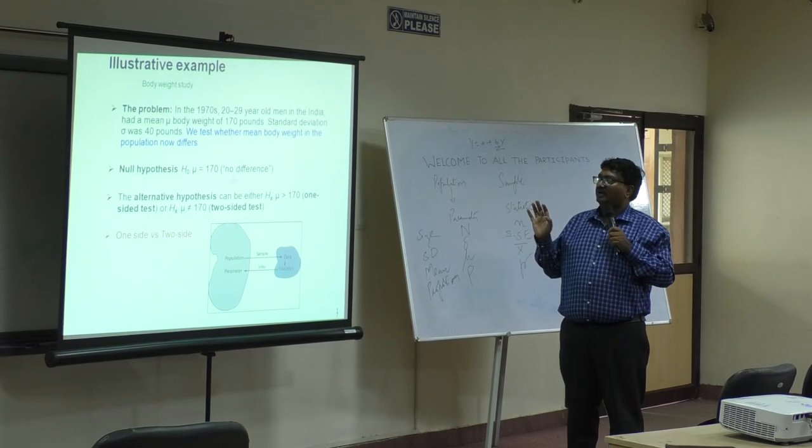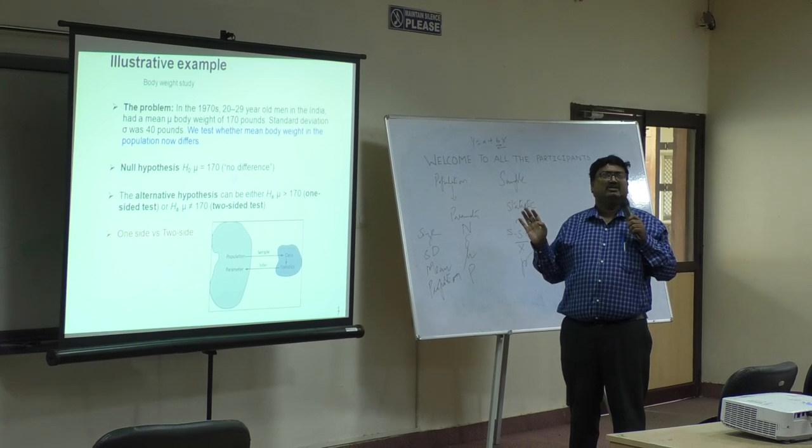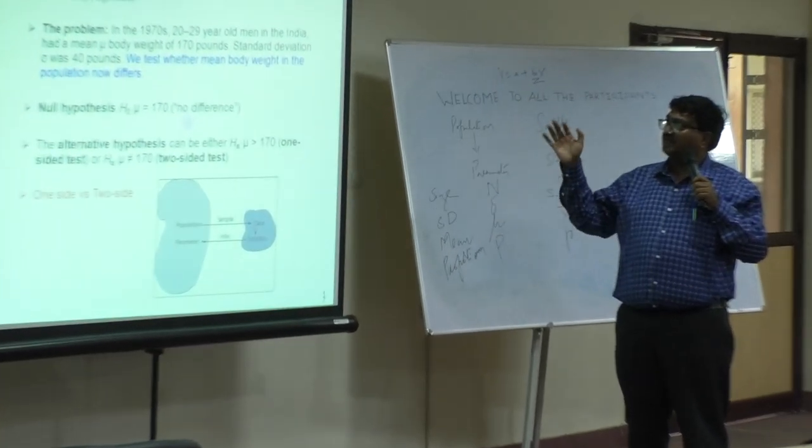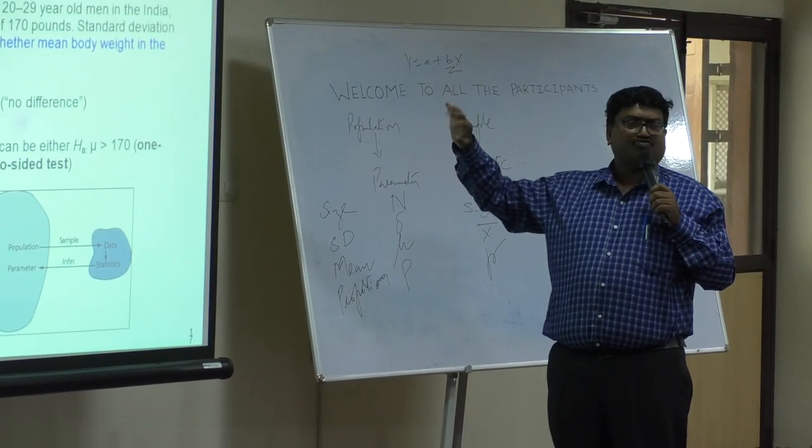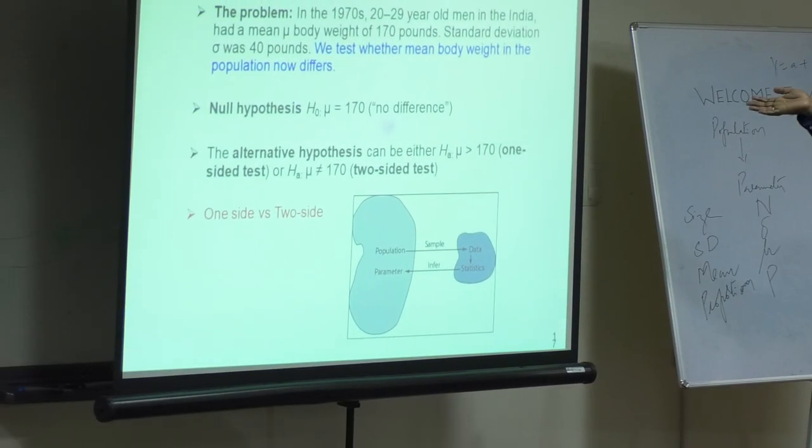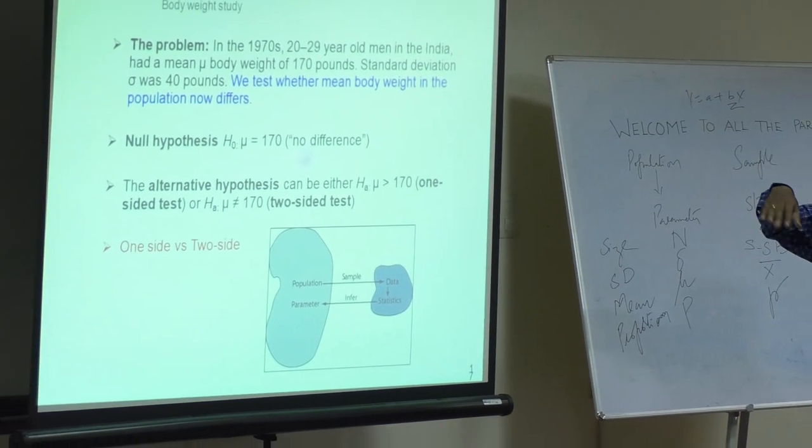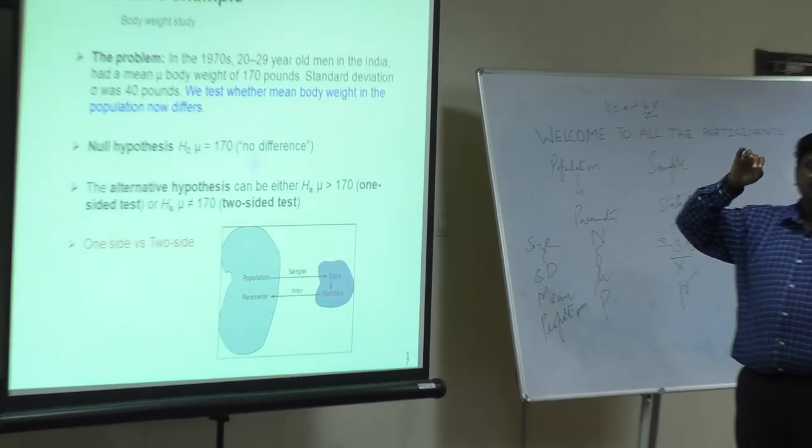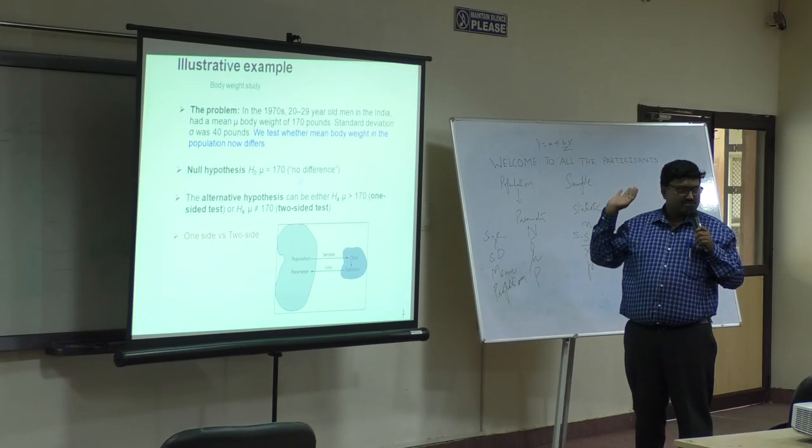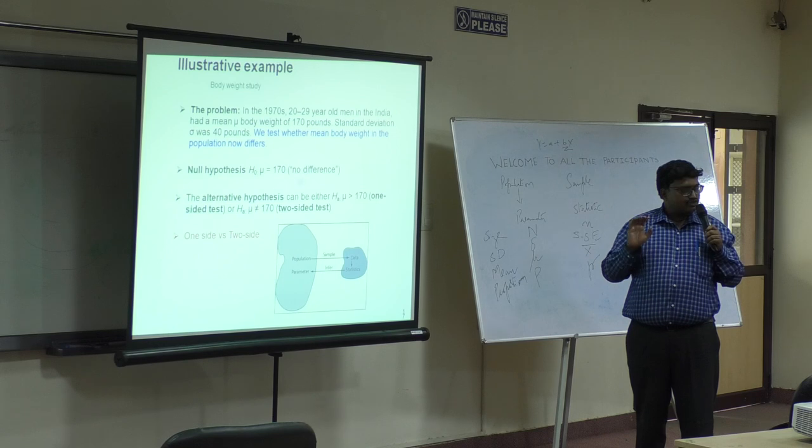Consider a problem: a group had a mean body weight of 170 pounds with a standard deviation of 40 pounds. That means 170 plus or minus 40. What is your null hypothesis? The mean is 170. What is your alternate hypothesis? It's not 170.